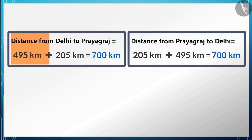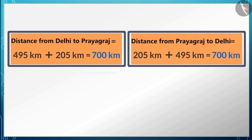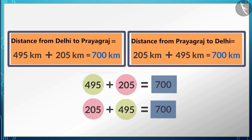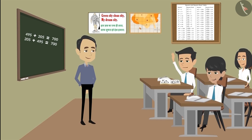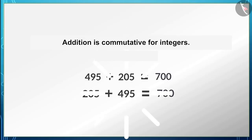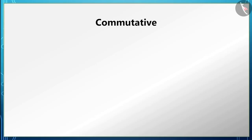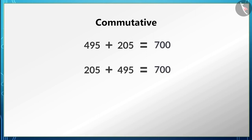We can see that Rahul covered equal distance in both situations. Changing the order of the numbers did not change the answer. The addition of integers is commutative. Commutative means that even after changing the order of numbers in an operation, the result doesn't change — the change of order doesn't affect the result.